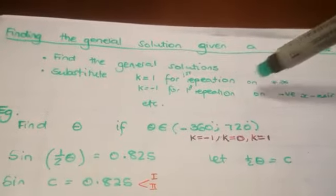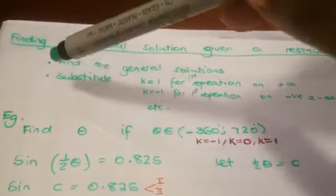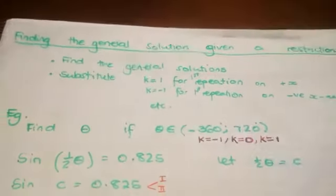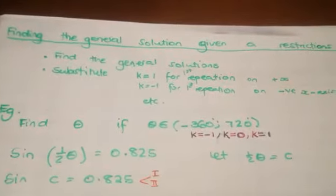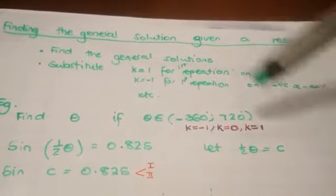That means after finding the general solution, we'll substitute K for the first repetition on the positive x-axis, and then K equals negative 1 for the first repetition on the negative x-axis, depending on what the restriction is going to be.